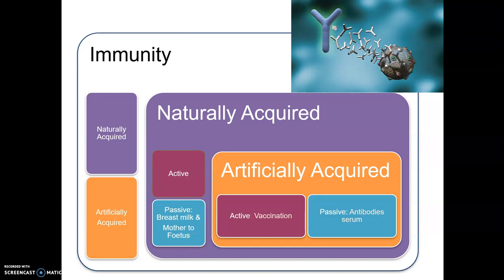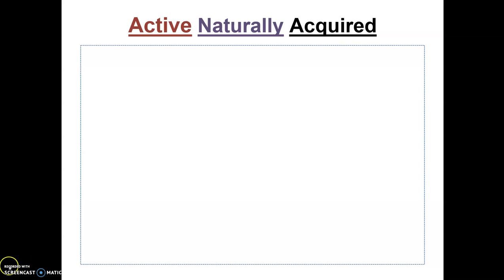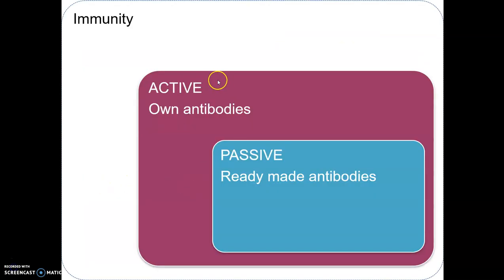We're going to start by looking at active naturally acquired immunity, but first let's look at the difference between active versus passive immunity. Active immunity is present where the body makes its own antibodies, and passive immunity occurs where you are supplied with ready-made antibodies.